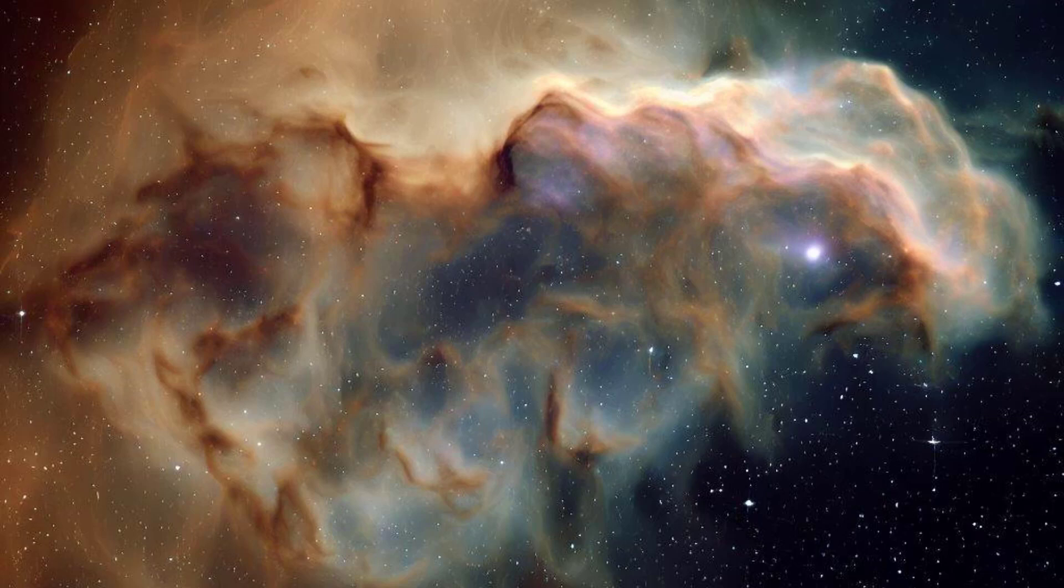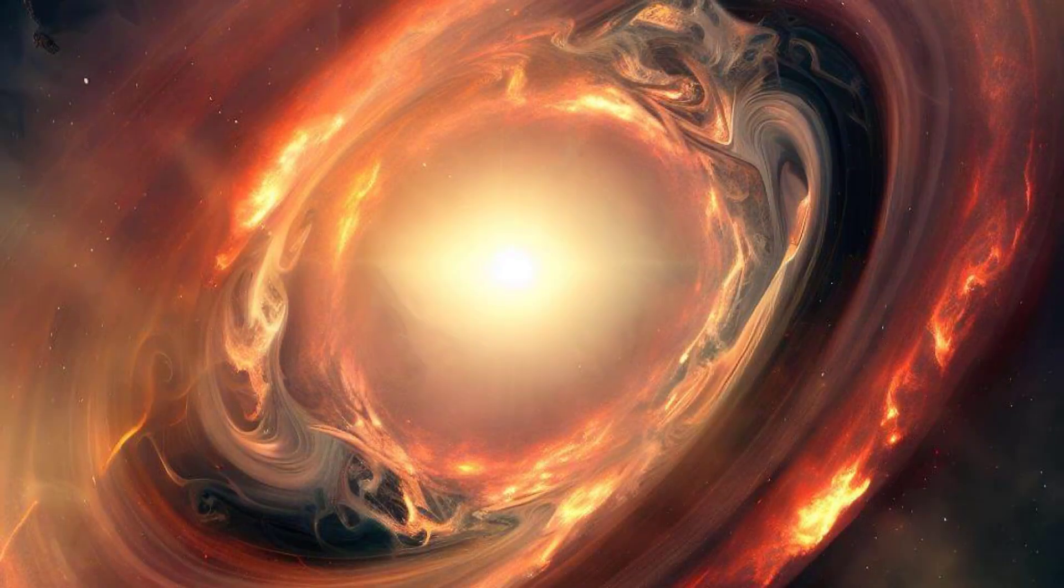As the cloud rotated, it flattened into an accretion disk. The denser material in this disk coalesced to form the rocky planets, while the lighter gases farther from the sun gave rise to the gaseous giants we see today. This remarkable accretion process sculpted our diverse solar system, where the inner planets are rocky and small, while the outer planets are massive and gaseous.